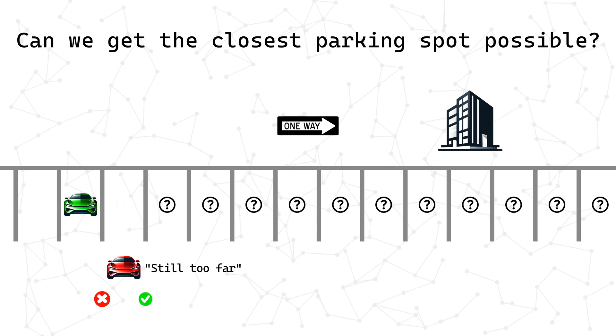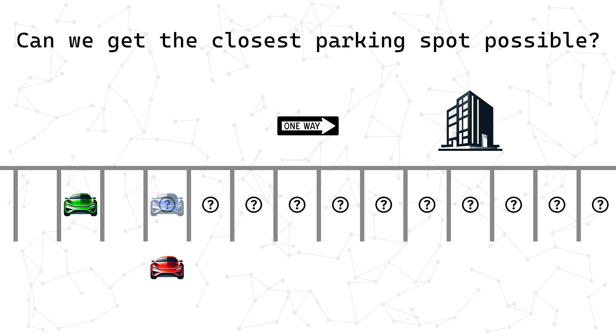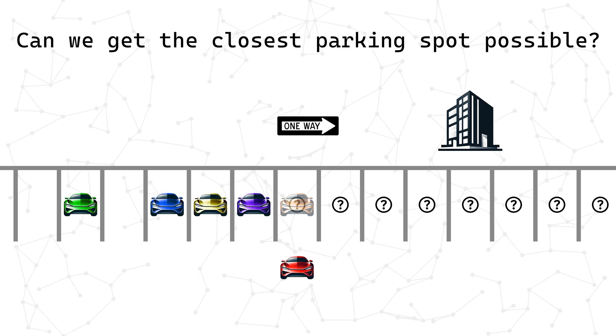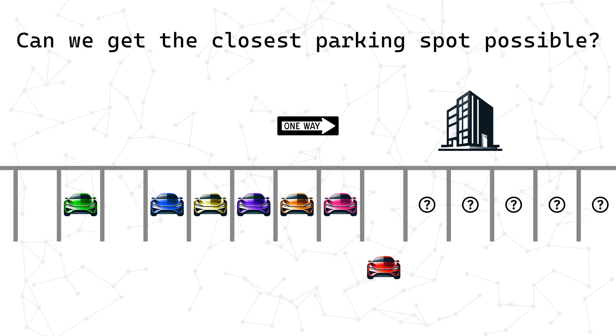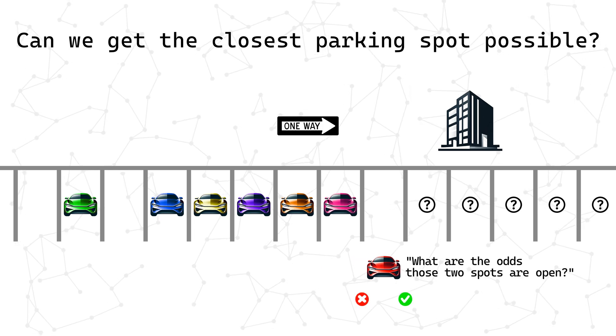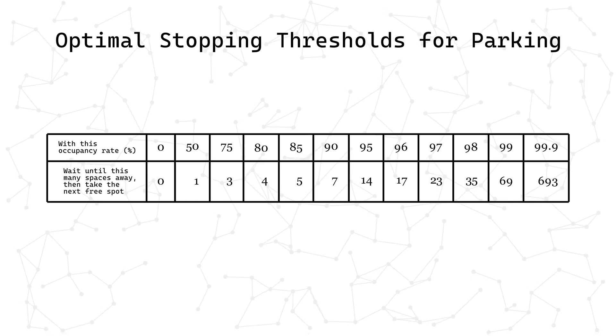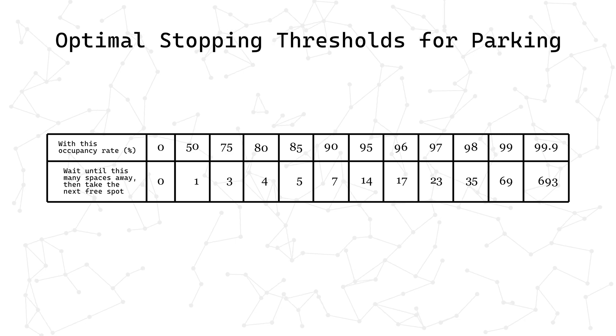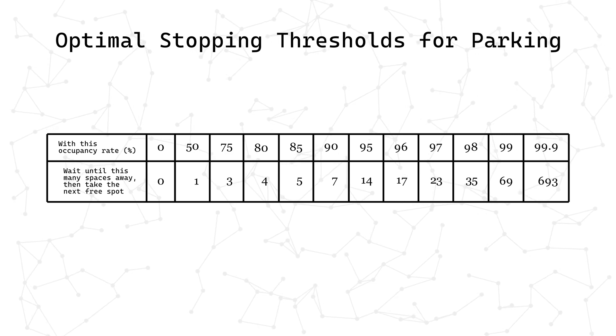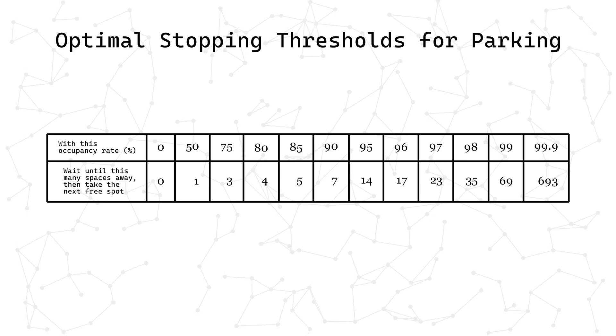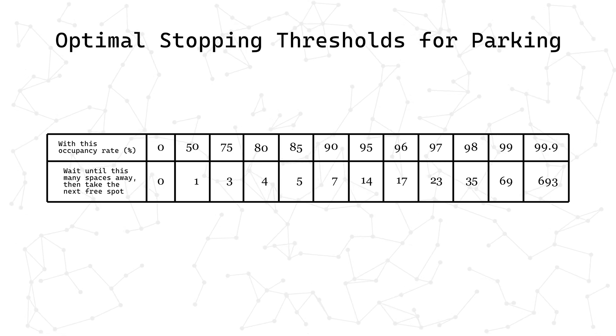The challenge is that you only have information about the availability of a parking space when you are directly beside it, forcing you to make an immediate decision to either take the spot or risk the uncertainty of finding another. As you get closer, the potential value from having to walk less increases, but at the risk of passing your destination to find a spot. Thankfully, we have math to the rescue once again. The one parameter we need is what percent of the spots are taken, assuming they're evenly distributed. The rates the book offers show how one should start looking for a parking spot further out as the proportion of occupied spots increases — once you are this number of spots away from your destination, you ought to take the first empty spot you see.